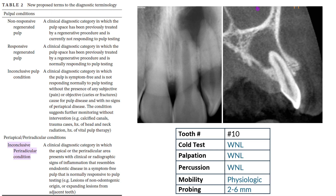An inconclusive periapical condition is defined as a clinical diagnostic category in which the apical or periapical area presents with clinical or radiographic signs of inflammation that resembles endodontic disease in a symptom-free pulp that is normally responsive to pulp testing — such as a lesion of non-odontogenic origin, an expanding lesion of non-odontogenic origin, or an expanding lesion from adjacent teeth — which is the same status as my case.